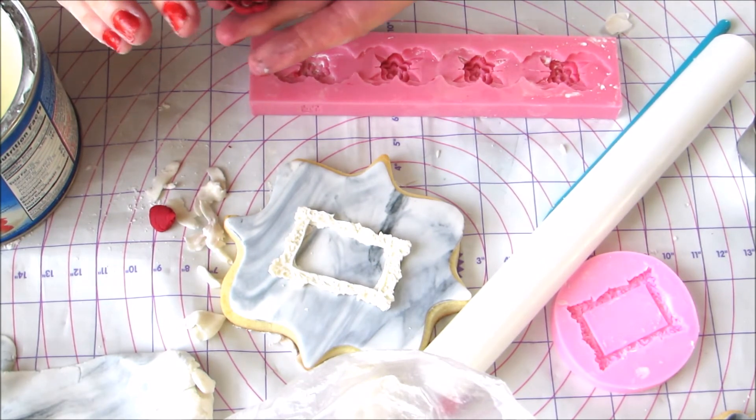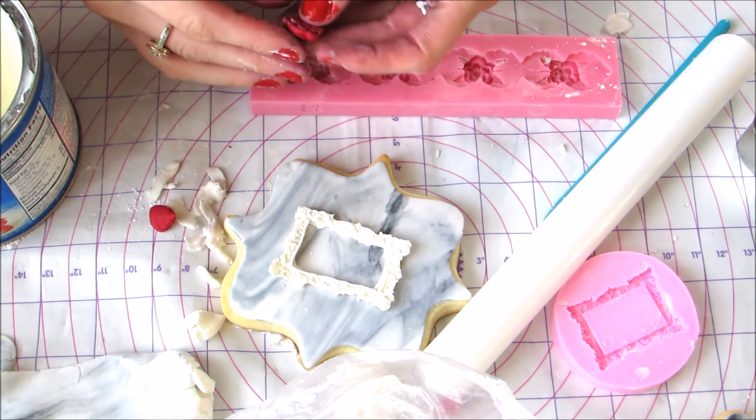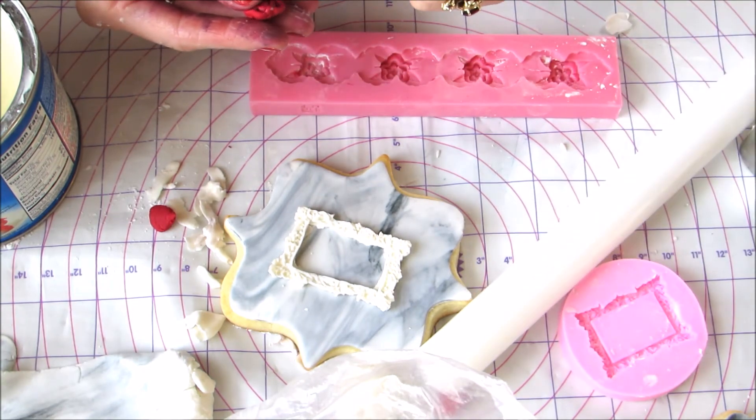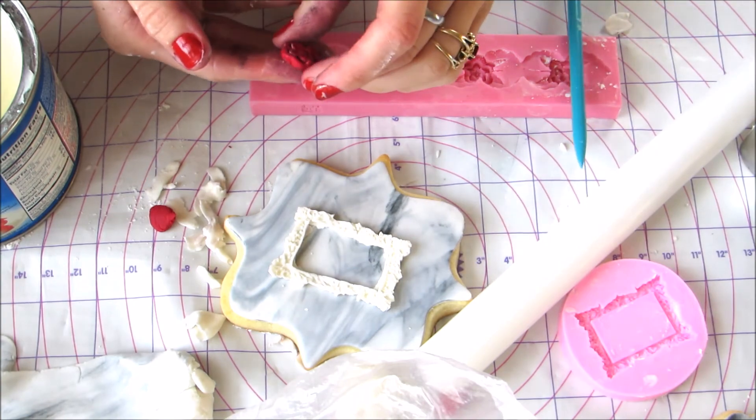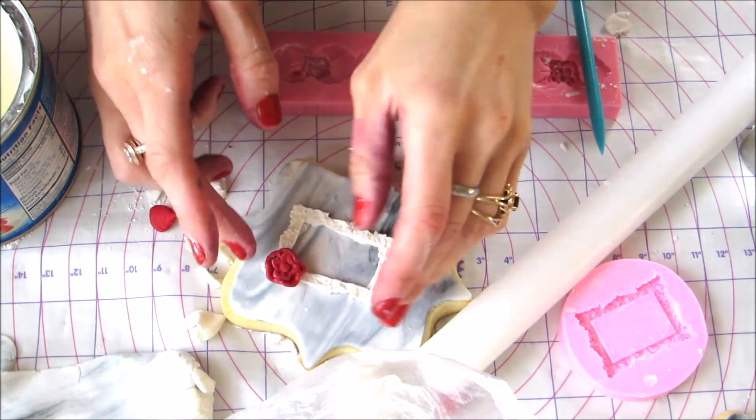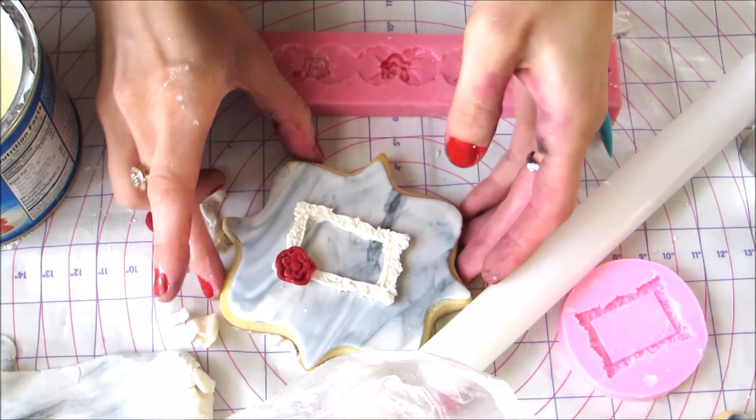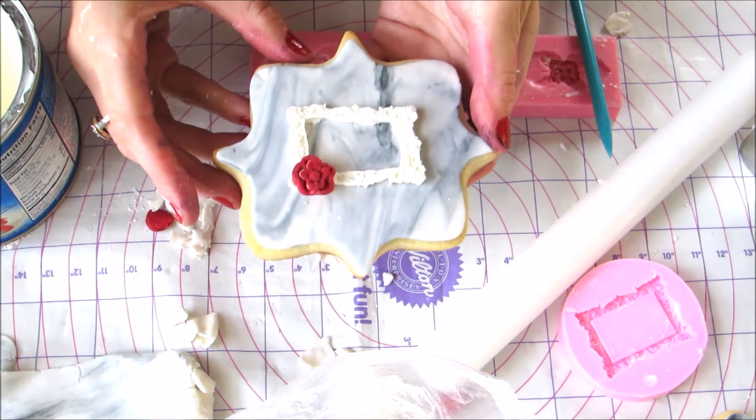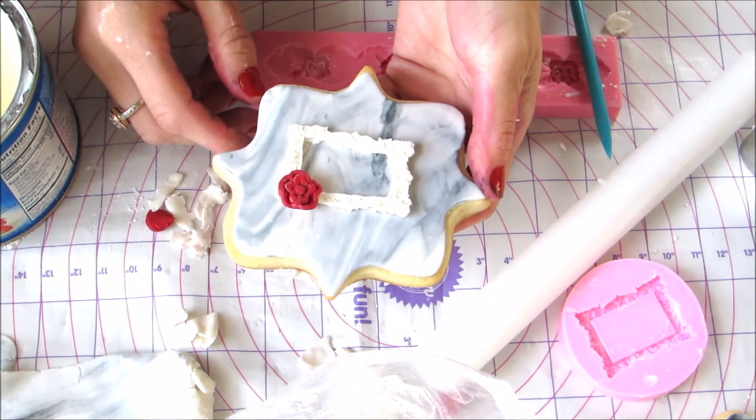You can also get rid of that by adding some water, and affix it to your frame. And there you have a marble effect black cookie. Thanks for watching.